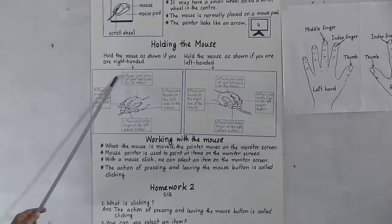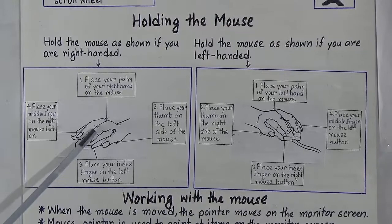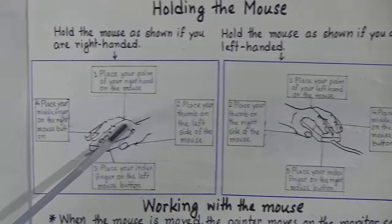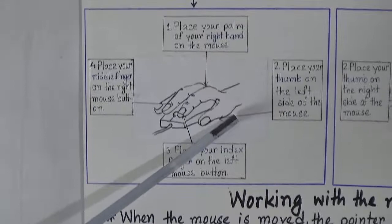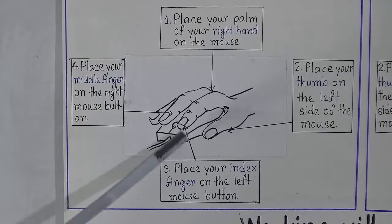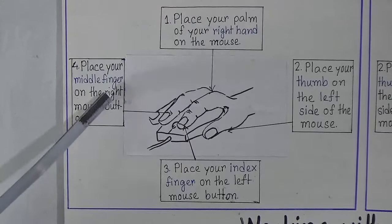If you are right-handed, hold the mouse as shown in the picture. First, place the palm of your right hand on the mouse. Second, place your thumb on the left side of the mouse. Next, place your index finger on the left mouse button, and then place your middle finger on the right mouse button.